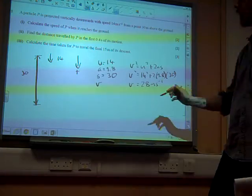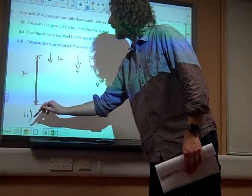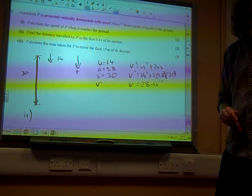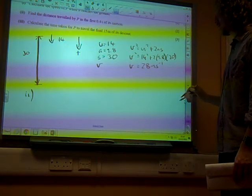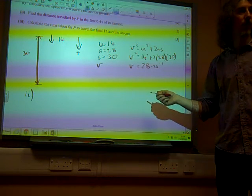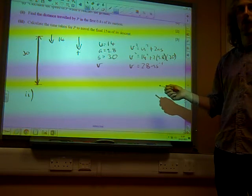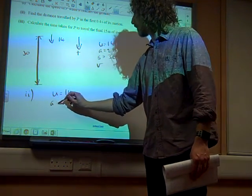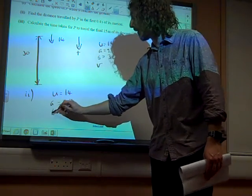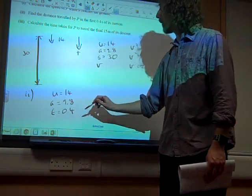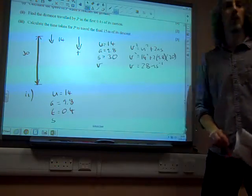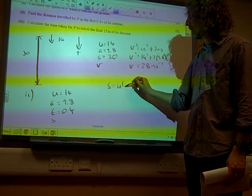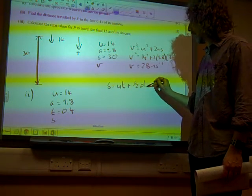Part 2. Find the distance travelled by P in the first 0.4 seconds of its motion. Okay. So this V, 28 doesn't come into this at all. This is a fresh start on this. So we've got our initial speed is 14. Our acceleration is 9.8. It's the first 0.4 seconds. So T is 0.4. And we're looking for the distance travelled. We're looking for S. So that seems to be linking together. S equals UT plus half AT squared.